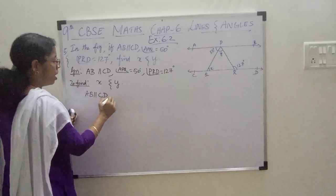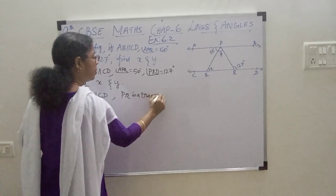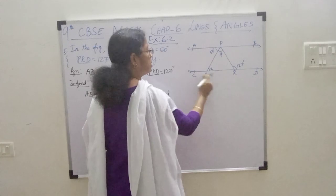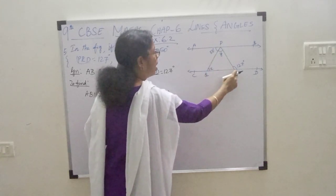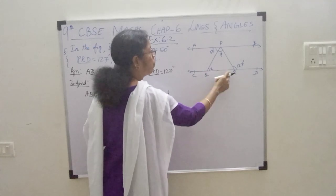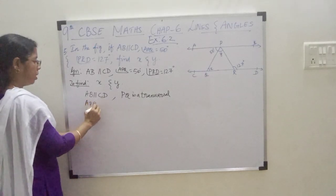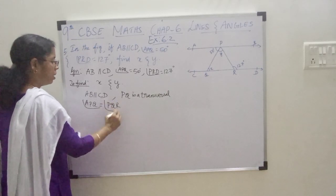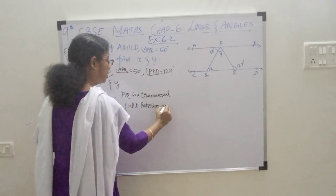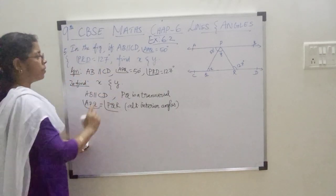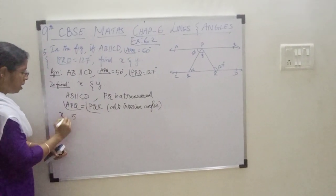Consider this: AB is parallel to CD and PQ is the transversal. AB and CD are parallel and PQ is the transversal, in which angle APQ and angle PQR are alternate interior angles, which are equal. Angle APQ is equal to angle PQR — these are alternate interior angles. Angle APQ is given as 50, and angle PQR is given as X.